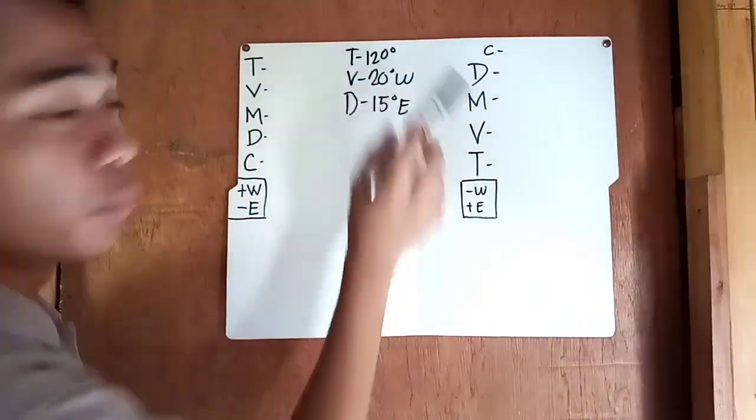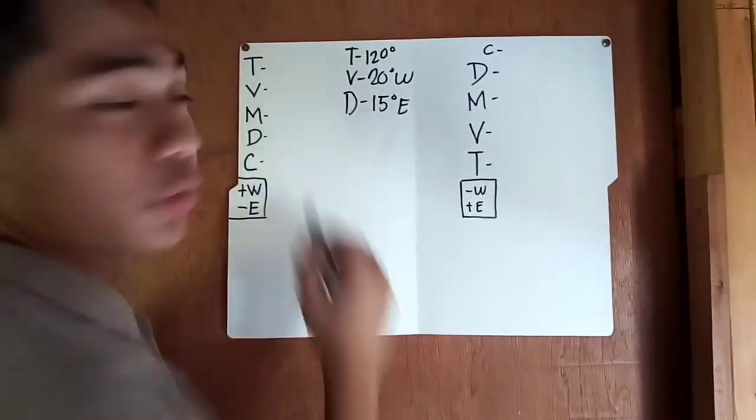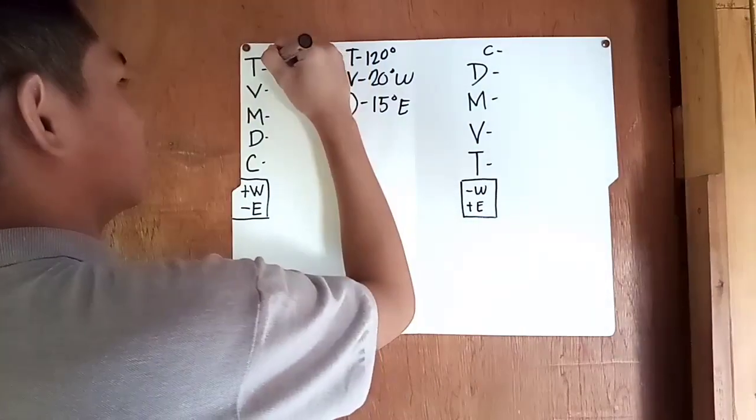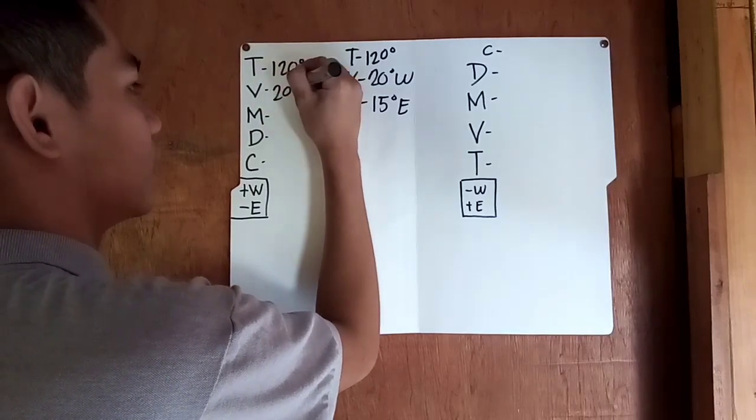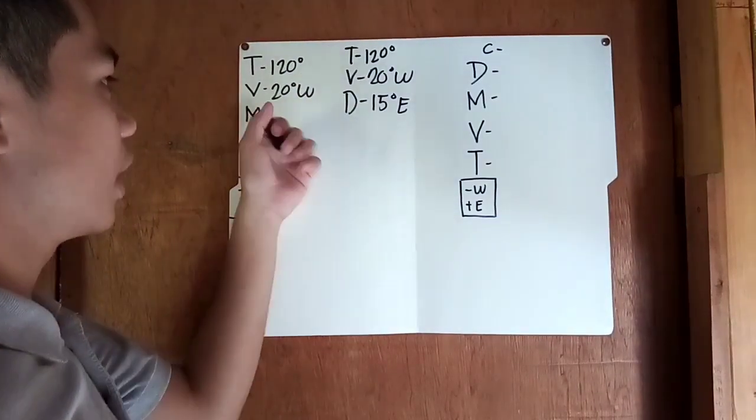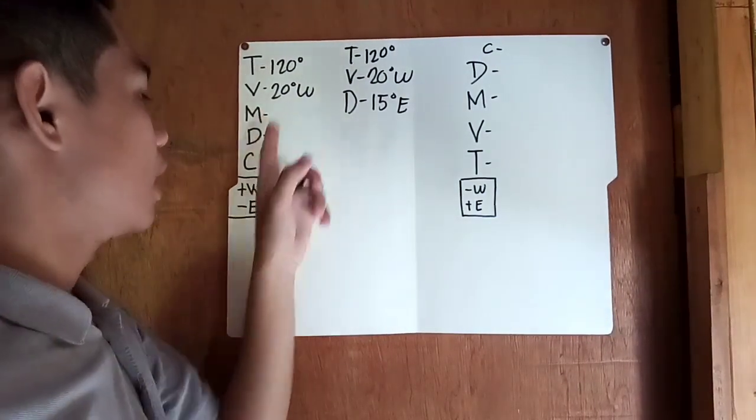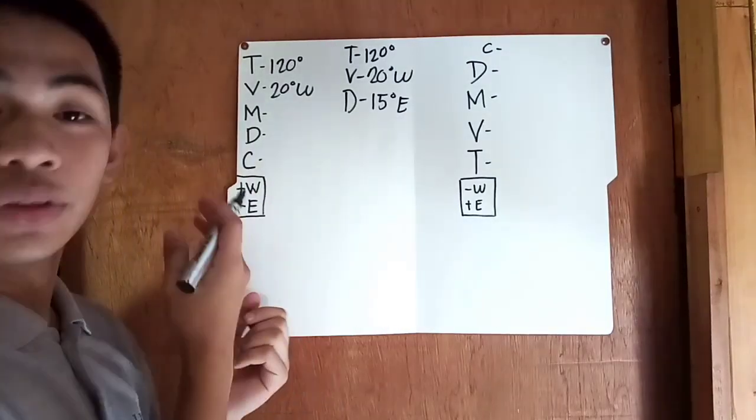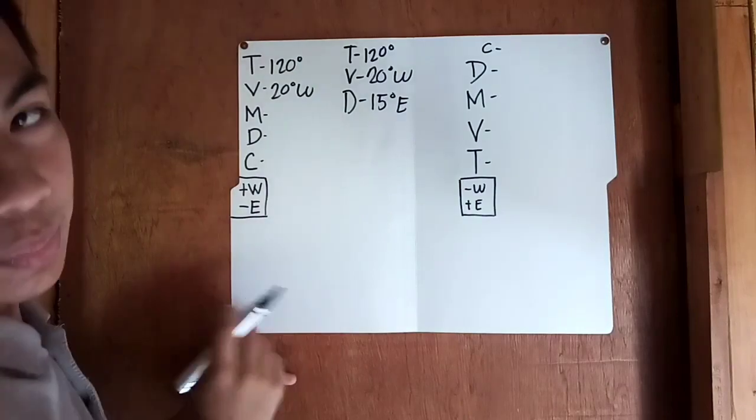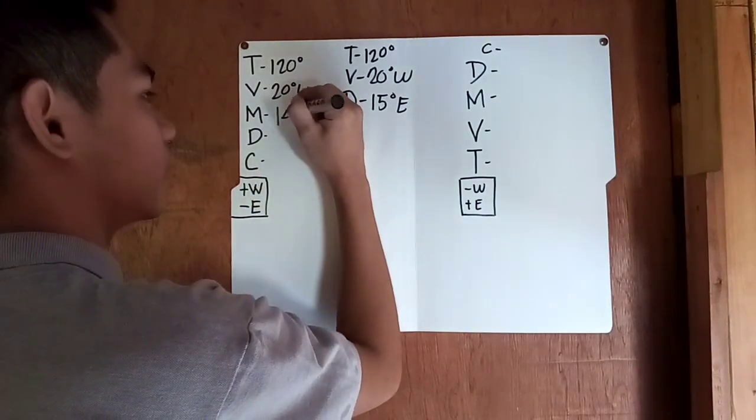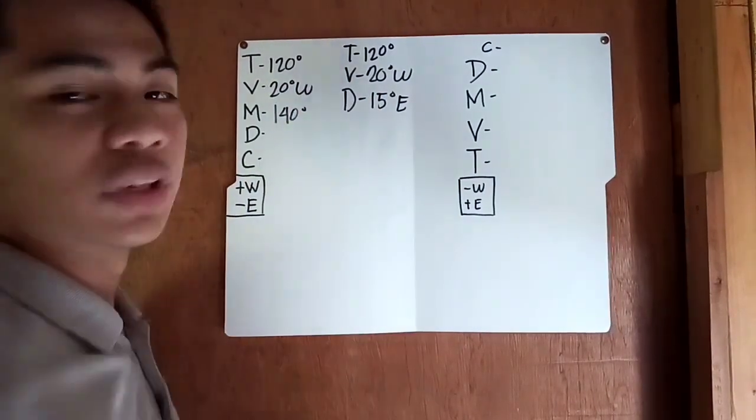We will just copy it. True course is 120 degrees and variation is 20 degrees westerly. To get the magnetic north we must add it because it is the golden rule - west is to add the sum. So 120 plus 20, the sum is 140 degrees.